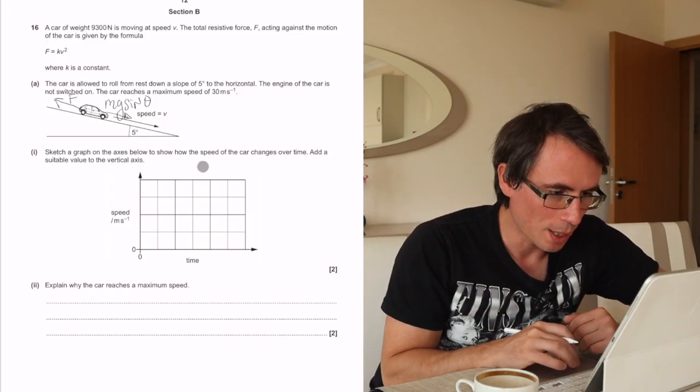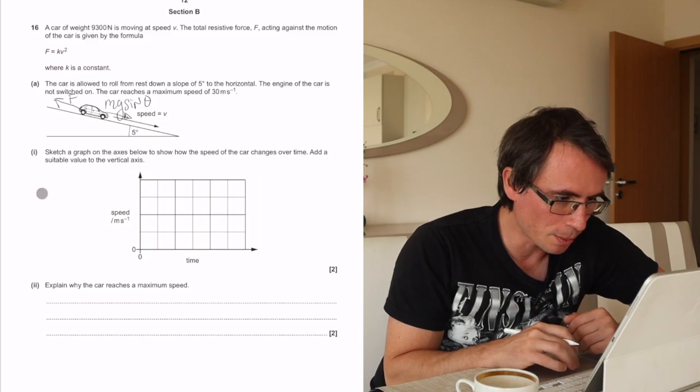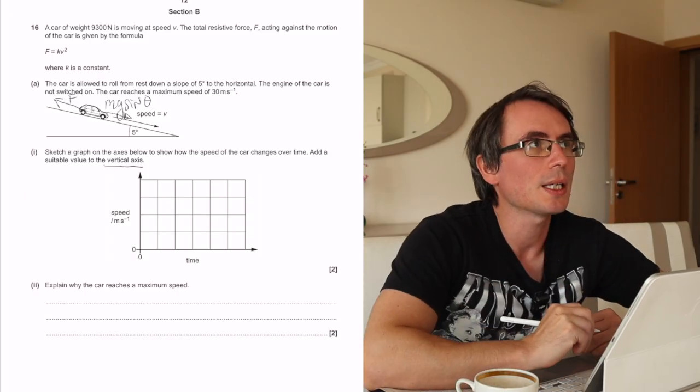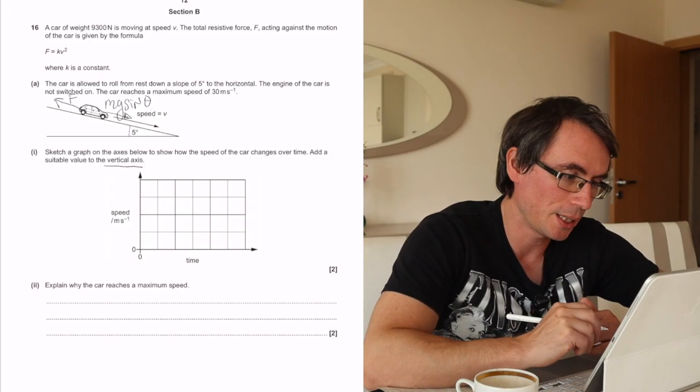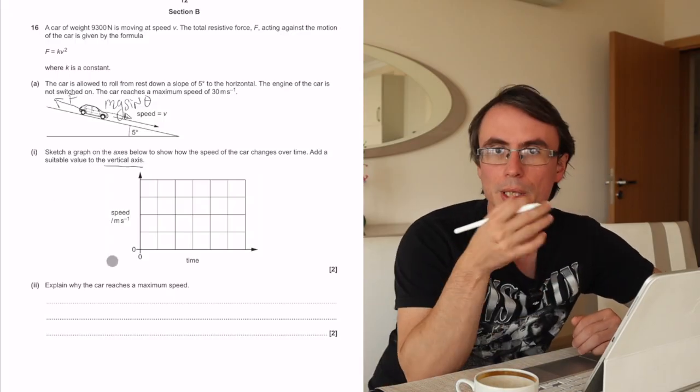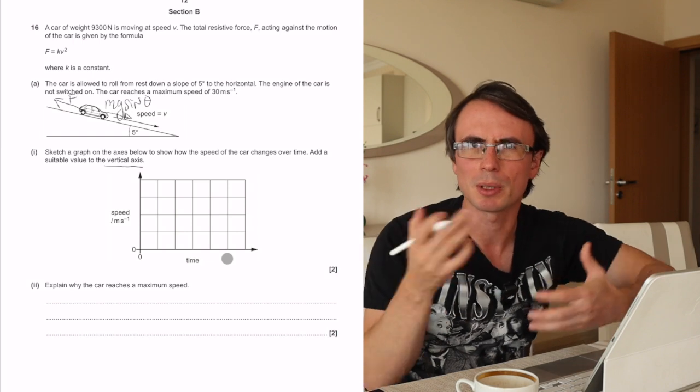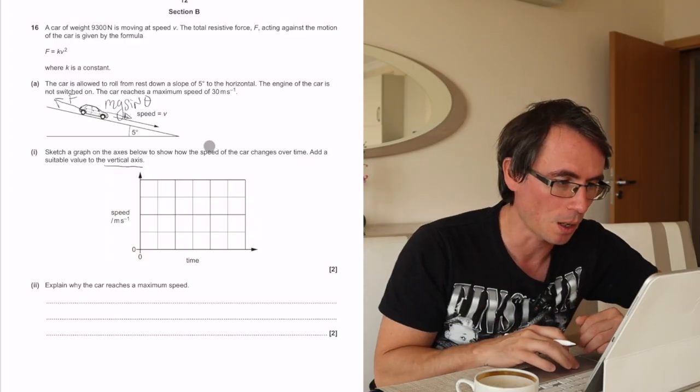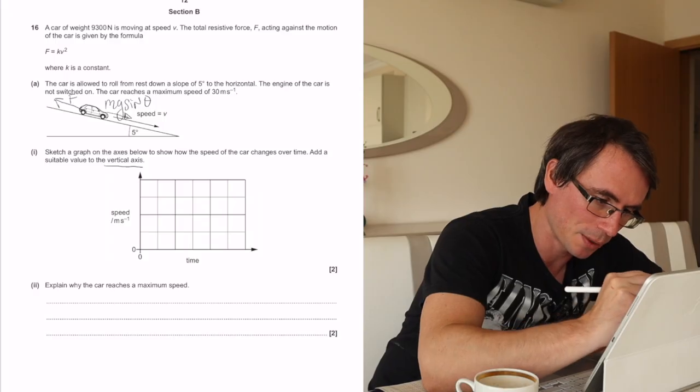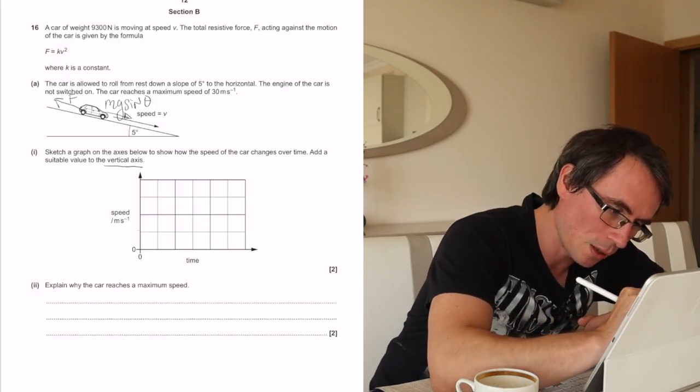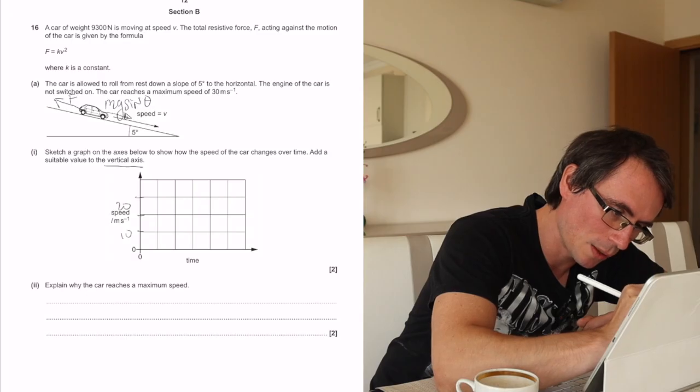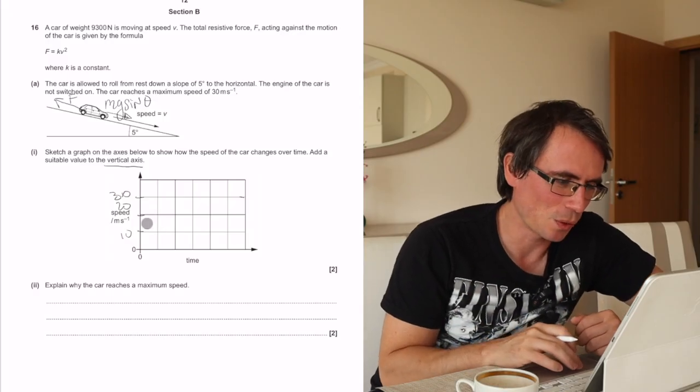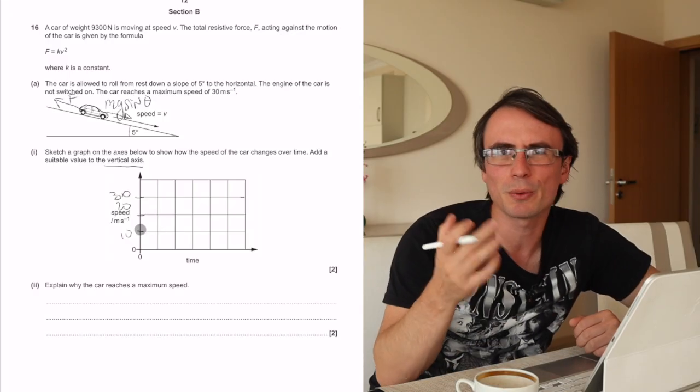Sketch a graph on the axis below to show how the speed of the car changes over time. Add a suitable value to the vertical axis. It's quite easy to go into a rabbit hole with this problem and try to find the exact time when the car will reach maximum speed, but we only need to add a value to the vertical axis. What will actually happen to the car? The car will reach a maximum speed of 30 meters per second.